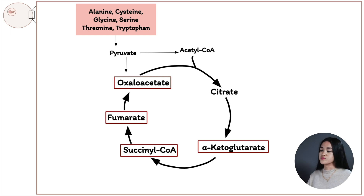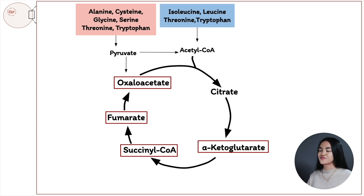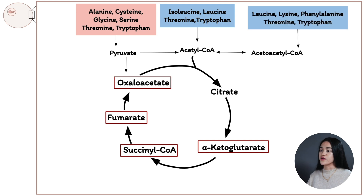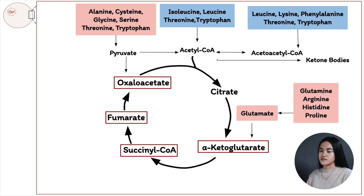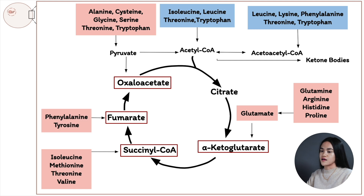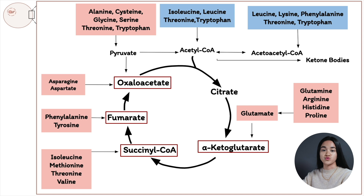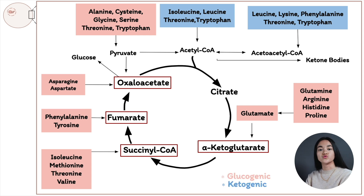Some amino acids can be transformed to acetyl-CoA, which can then be converted to acetoacetyl-CoA, and these can produce ketone bodies. There are five amino acids that can enter the citric acid cycle as alpha-ketoglutarate: glutamate can be converted to alpha-ketoglutarate, and four amino acids — arginine, glutamine, histidine, and proline — can be turned to glutamate. Four amino acids can be converted to succinyl-CoA, a few can enter via fumarate, and two can be converted to oxaloacetate, which can also be diverted to gluconeogenesis. Therefore, amino acids can be classified as either ketogenic or glucogenic.